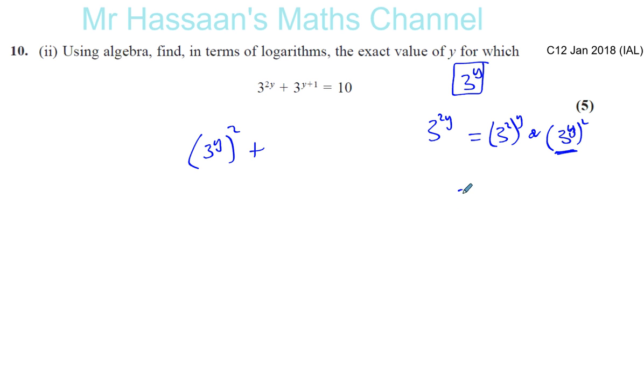Plus, now this is where you have 3 to the power of y plus 1. What was the origin of this? Well, it must have been 3 to the power of y times 3 to the power of 1 because we added the powers. You added the powers, the same base. So I can rewrite this as 3 times 3 to the power of y. And that's equal to 10.